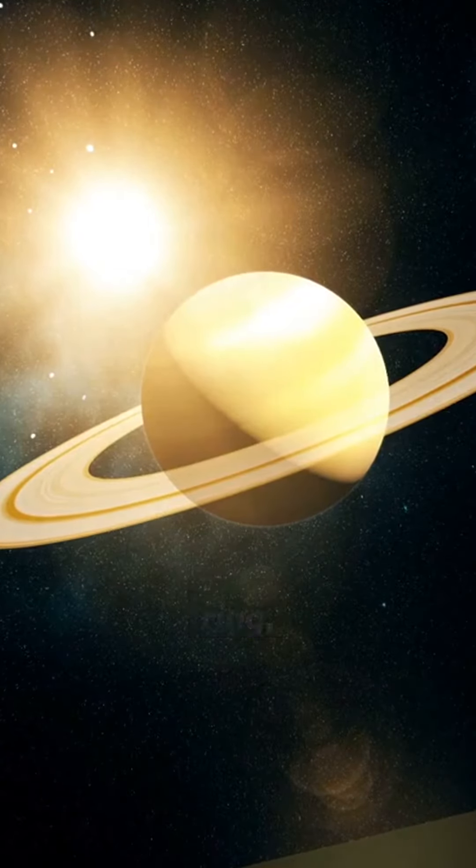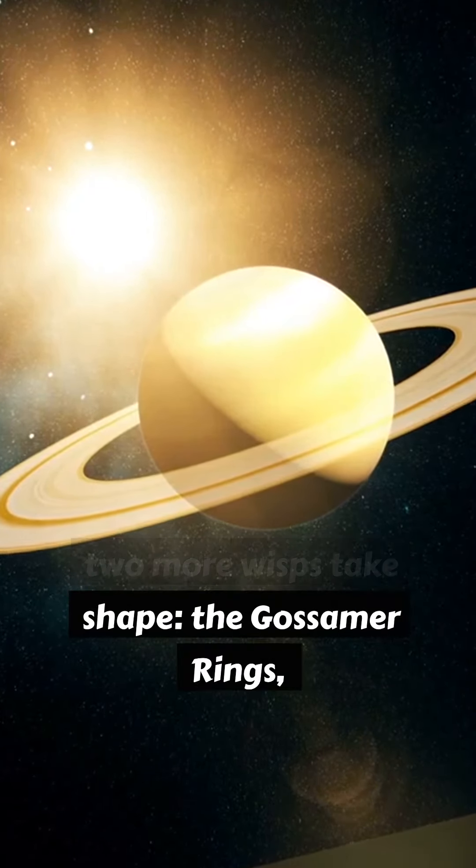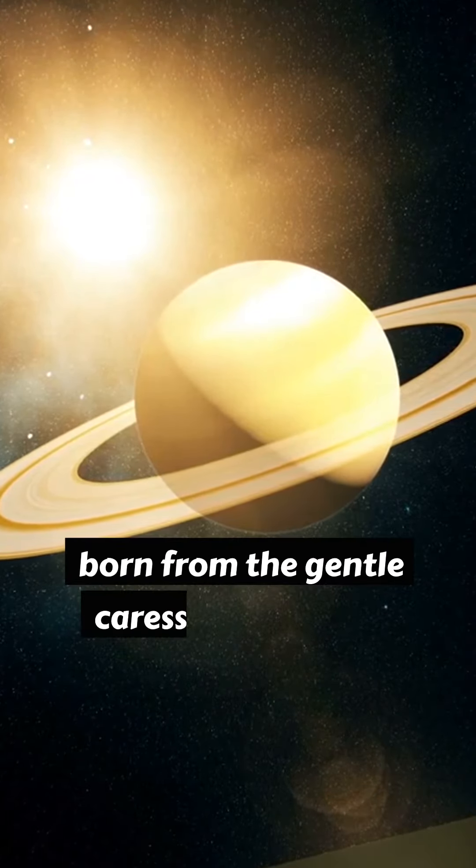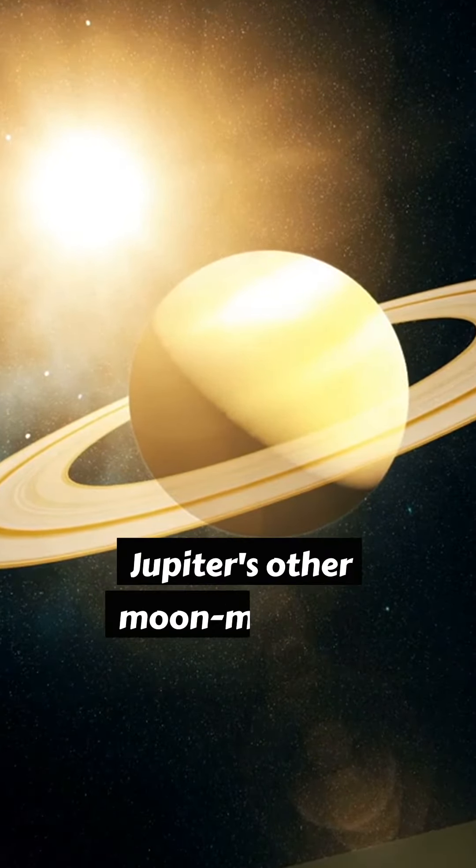Within this ethereal ring, two more wisps take shape, the Gossamer Rings. Born from the gentle caress of Amalthea and Thebe, Jupiter's other moon maidens.